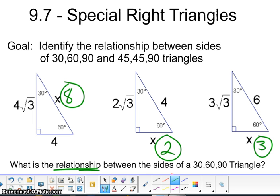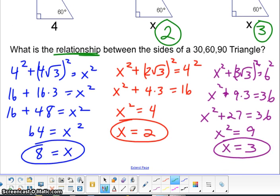So as you found out, the first one you get a value of 8, the second one you get a value of 2, and the third one you get a value of 3. If you did not get those, you can push pause and check your work.